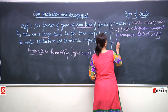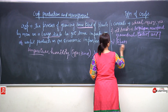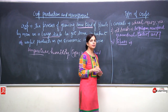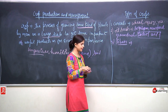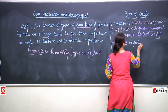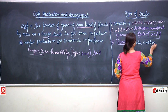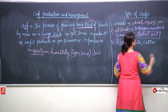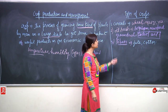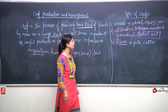Next are fibres. What is the meaning of fibres? For example, jute and cotton. All these come under which kind of crop? We will say it is a fibre crop.